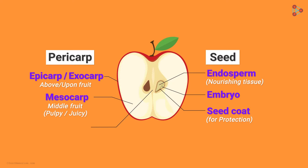Lastly, we have the endocarp. The term endo means 'within' or 'inside,' so it is the last layer of the pericarp which surrounds the seed. Depending upon the fruit, the endocarp can be either membranous or thick. These were the parts of a typical fruit.